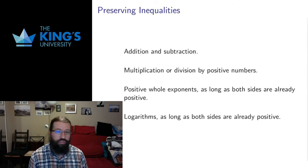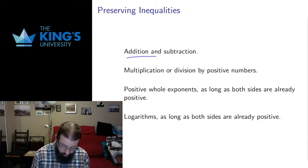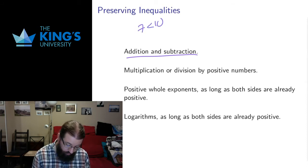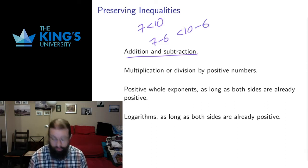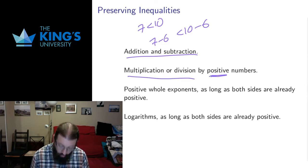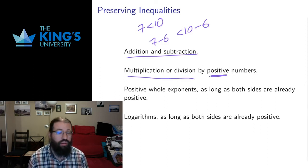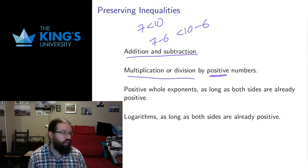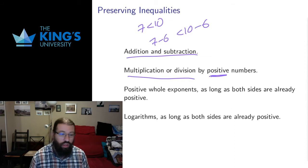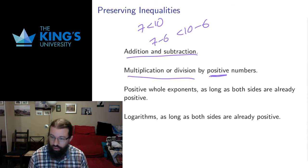So let's start with what we can do that preserves the inequalities. So things that we can do to both sides of the inequality that result in a new inequality. Addition and subtraction are fine. So if I have 7 is less than 10, then 7 minus 6 is still less than 10 minus 6. I'm allowed to add and subtract something to both sides. Likewise, I can multiply and divide, but here only by positive numbers. And now we already get into the situation where there are all sorts of special cases and things to remember for inequalities. We can't just do whatever we like. Every operation we do, we have to be careful and say, is this an operation that is valid?